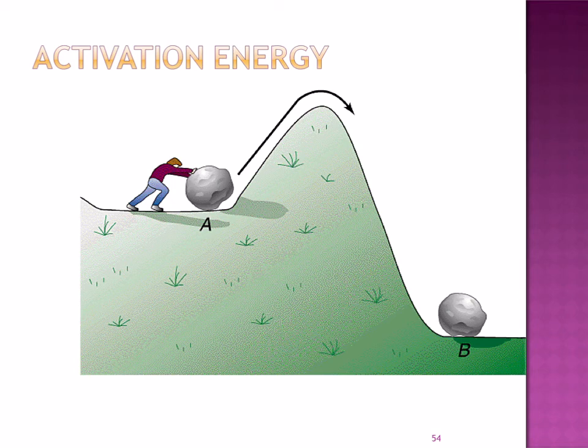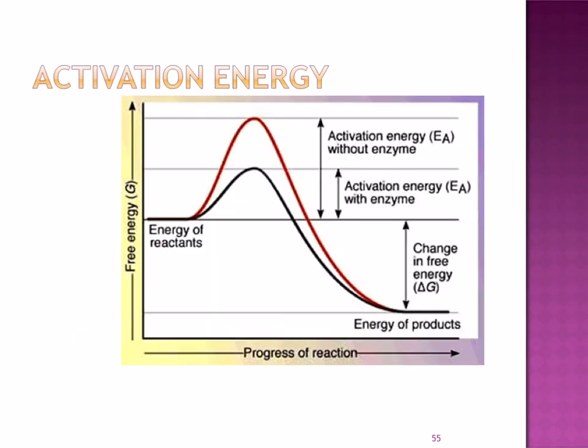Before any chemical reaction can proceed, it must be activated. The energy required is called activation energy. Catalysts lower this activation energy, and as shown in the graph, they enable a reaction to take place more rapidly and usually at lower temperatures.